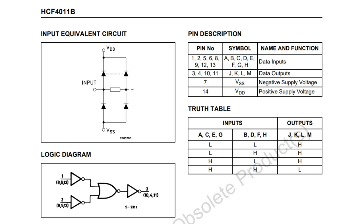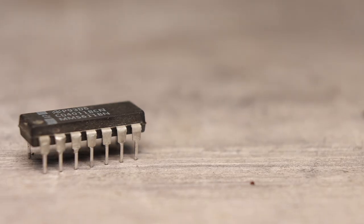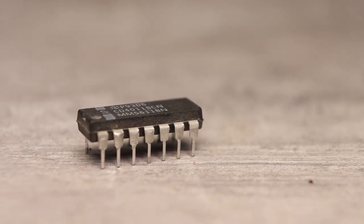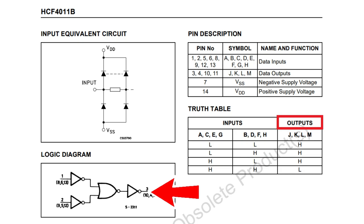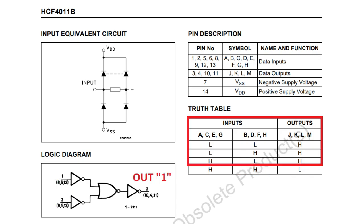Now you can see the truth table of the logical element NAND. To understand the principle of operation of the probe, you need to remember that the output of such an element will be low only if there is a high level at all its inputs. In any other case, the output will be high.